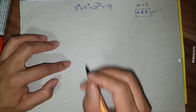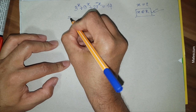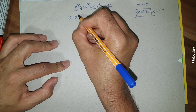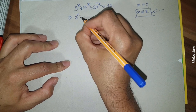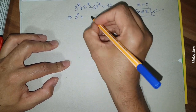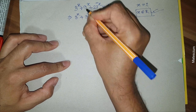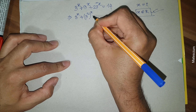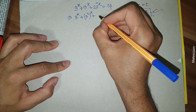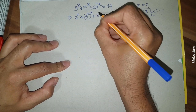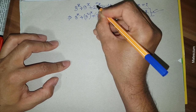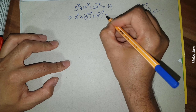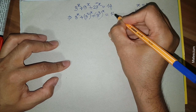Let's solve this mathematical problem. I want to rewrite the left-hand side: 3 to the power x stays as it is, plus 9 can be rewritten as 3 squared — because 3 squared equals 9 — and the whole power x remains. Plus 27 can be rewritten as 3 to the power 3, and the power x remains. The right-hand side stays as 14.